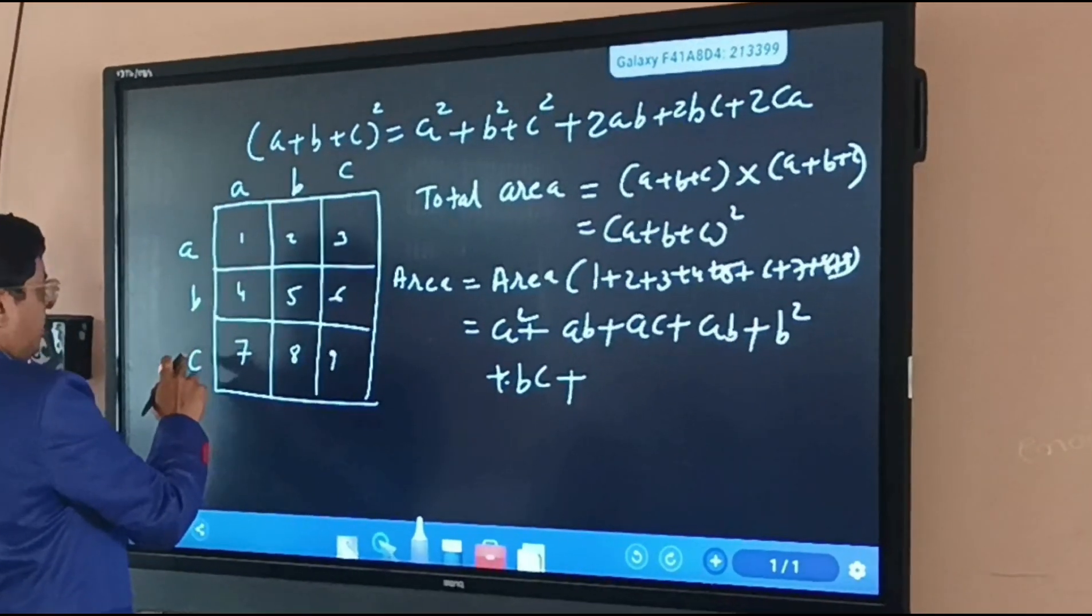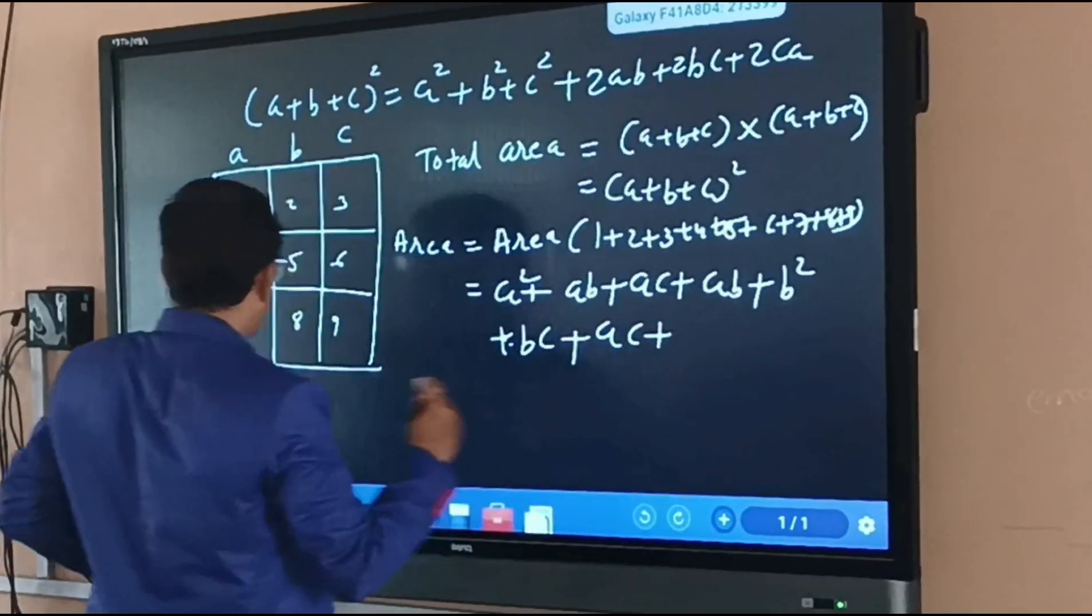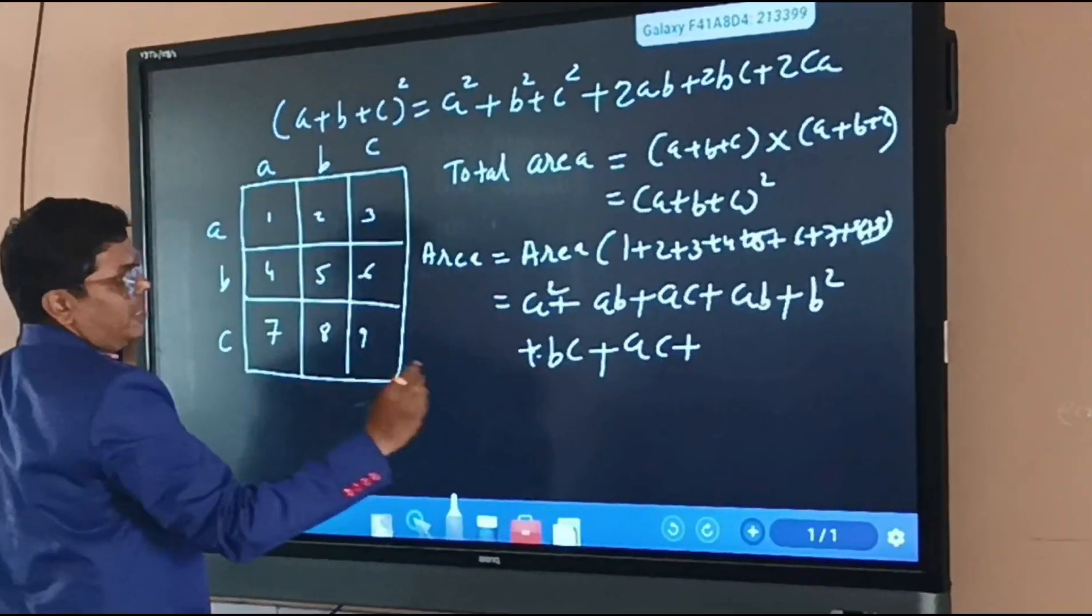Seventh part, that is c into a, that is ac. Eighth part, that is b into c, that is bc.